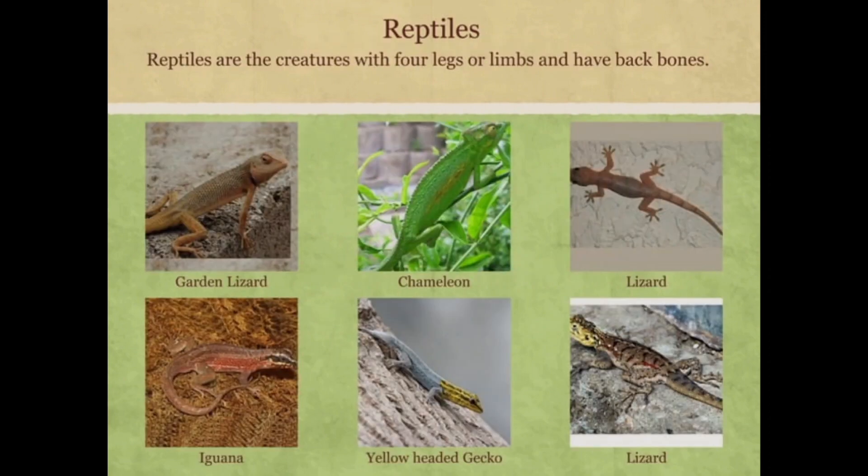Reptiles are creatures with four legs or limbs and have a backbone. Garden lizard, iguana, chameleon, yellow-headed gecko, house lizard and forest lizard are some examples of reptiles.